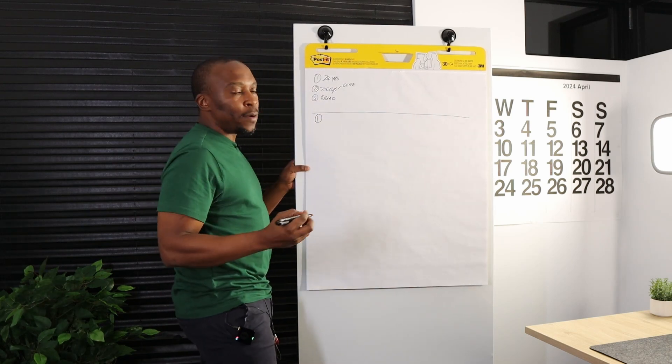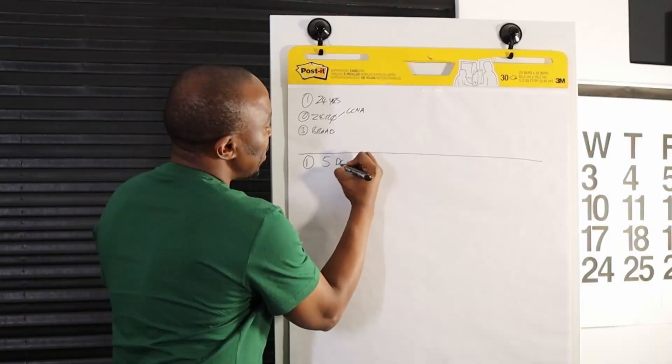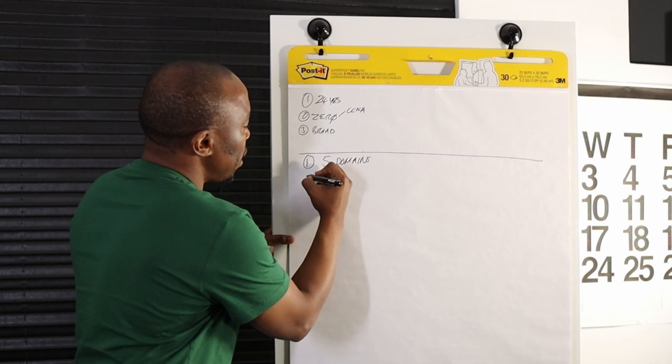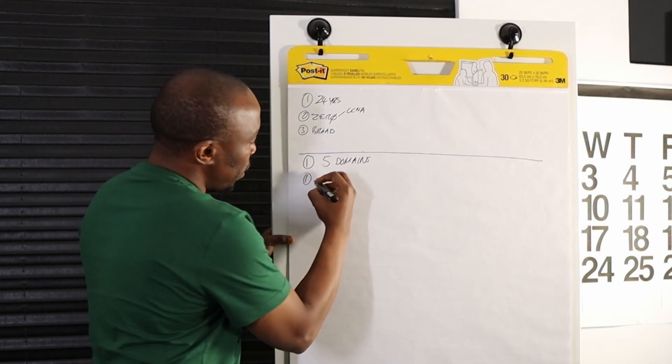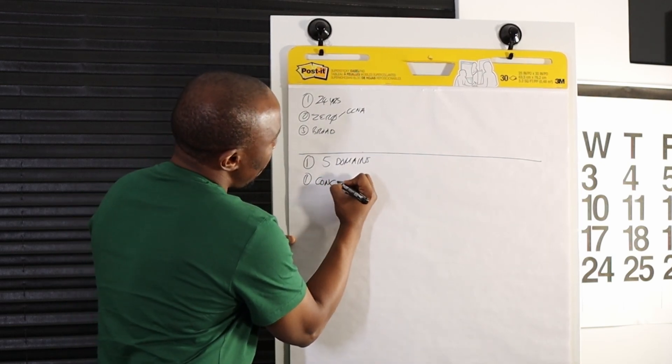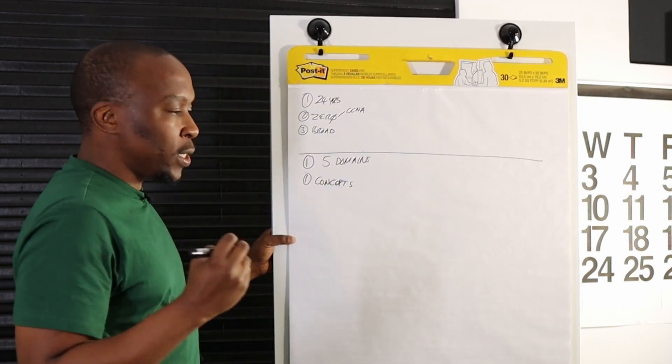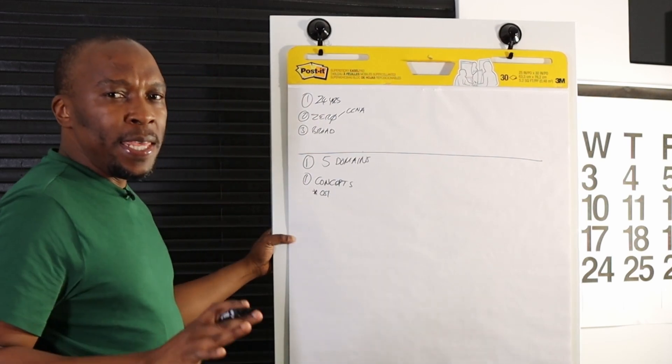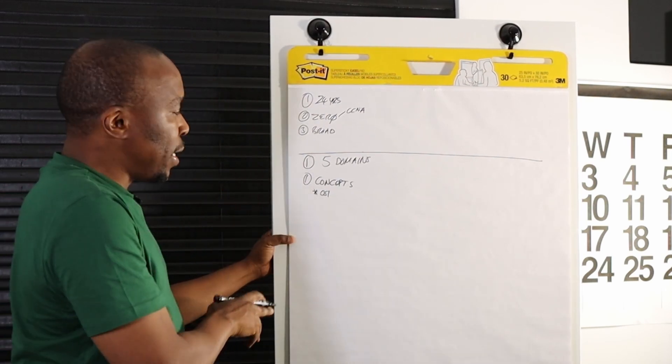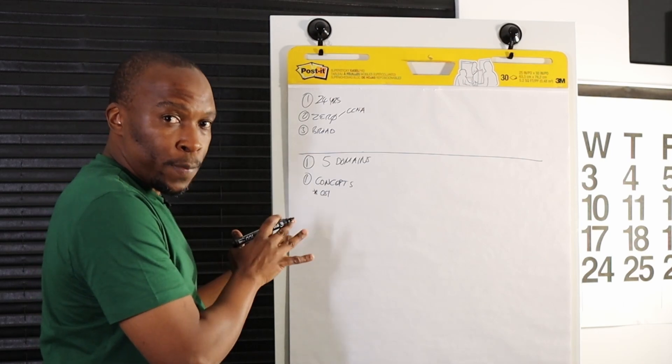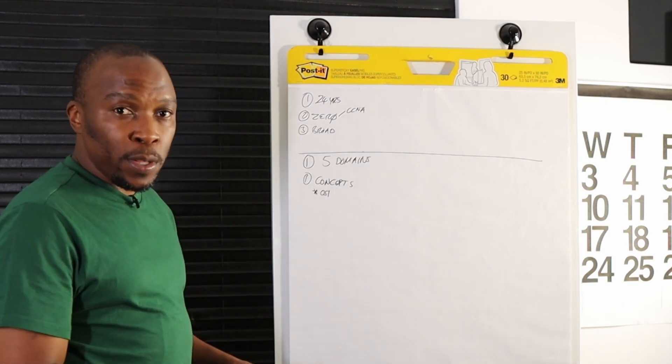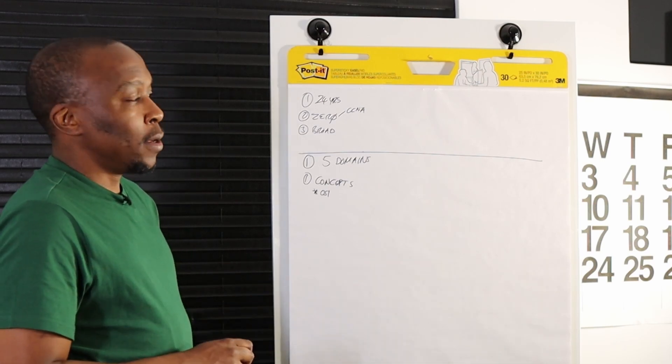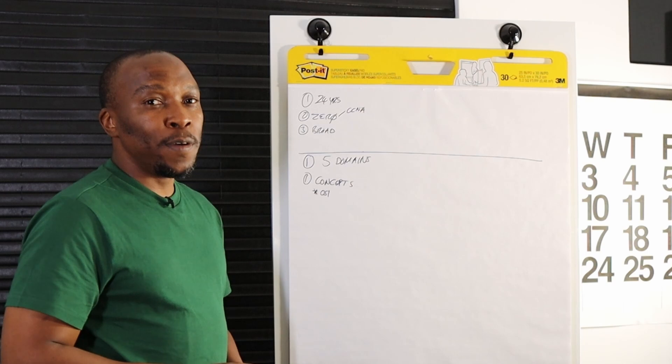The course is broken down into five domains or five areas of focus. The first one is network concepts. This is where you are going to be taught how networks operate, and the biggest framework that you're going to learn about is the OSI model. If you don't know about the OSI model, then I would say go sign for this course, you need it. You need to understand how the OSI model works.